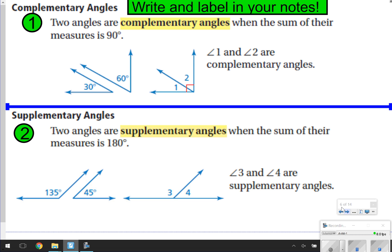Two angles that are Complementary when their two measurements equal 90 degrees. So here's a picture of what those look like. Two angles are Supplementary Angles when they measure 180 degrees. Again, here's a picture of what they look like.